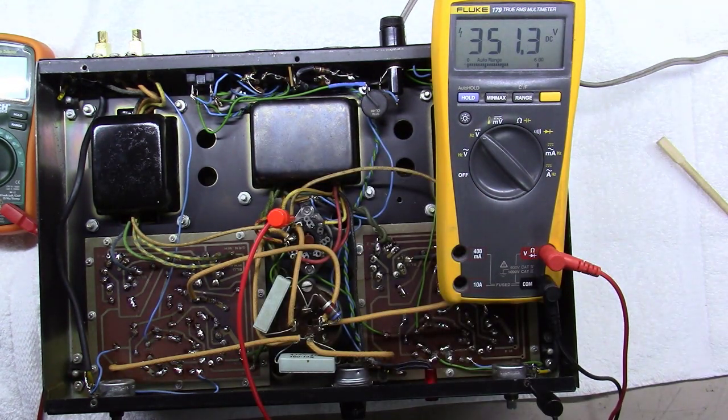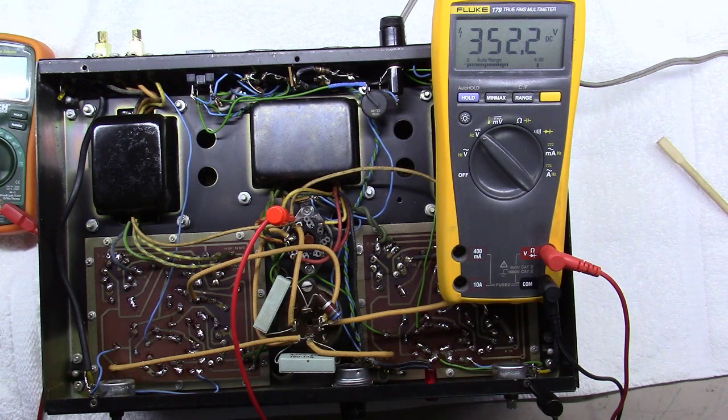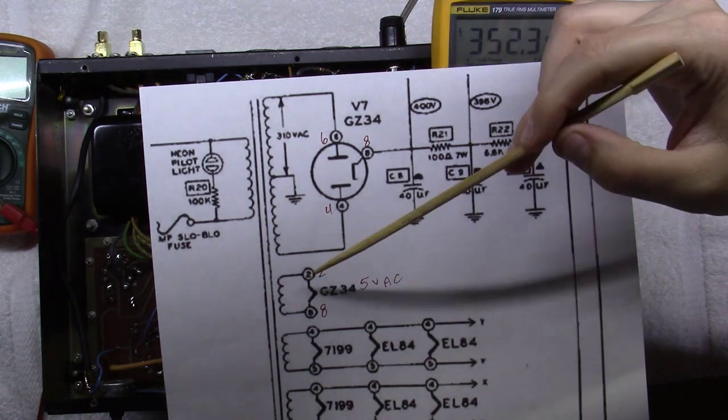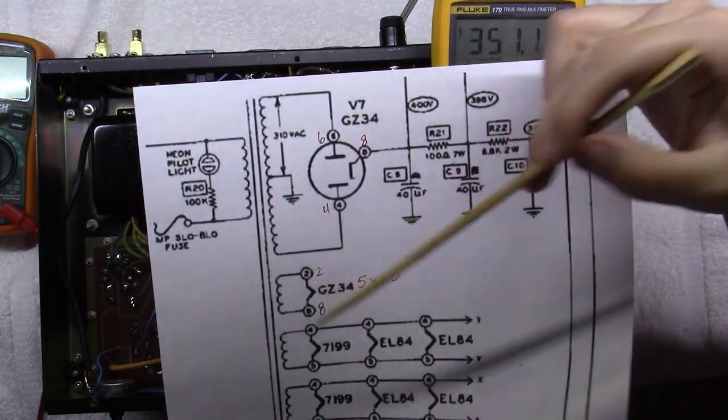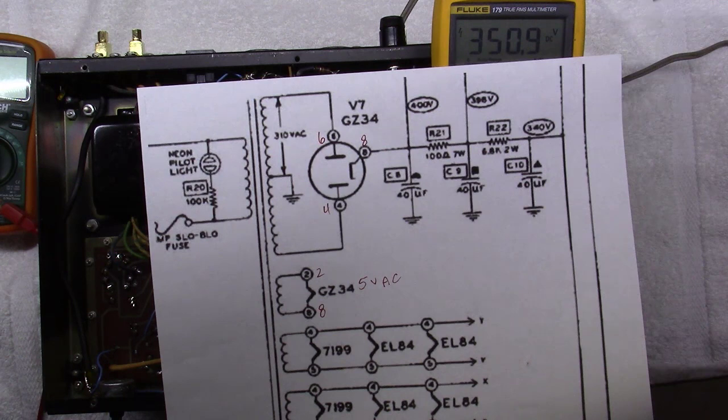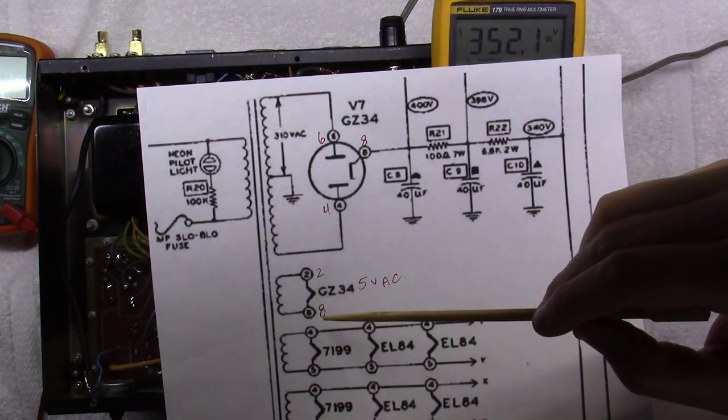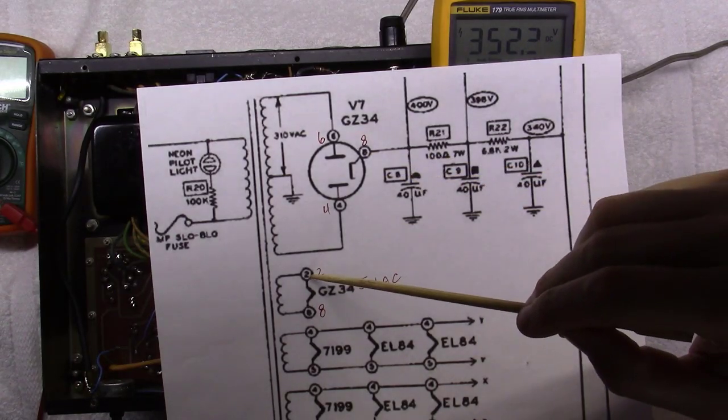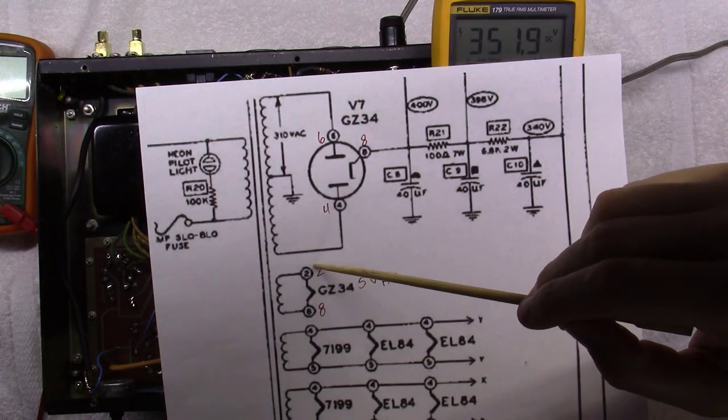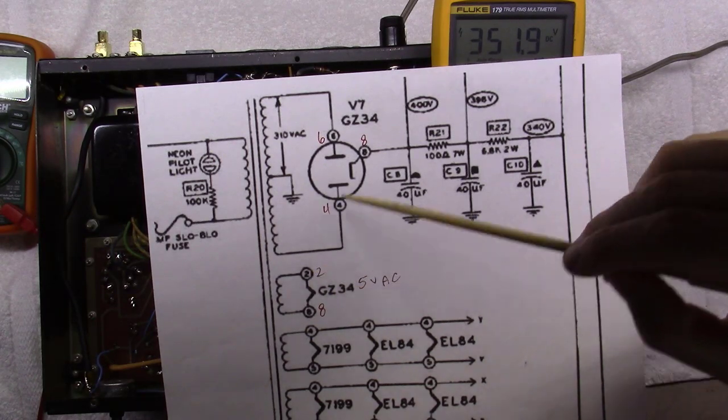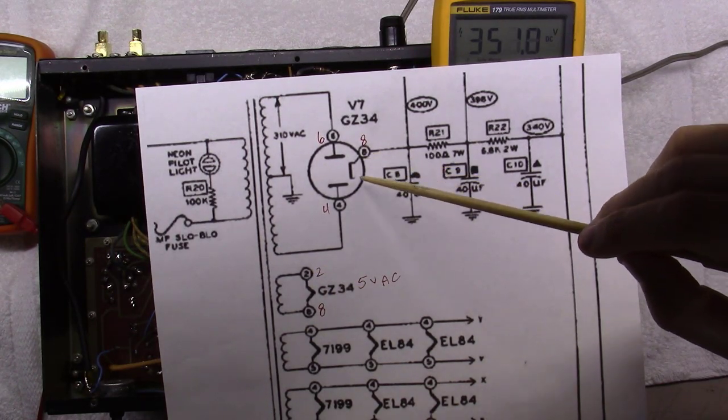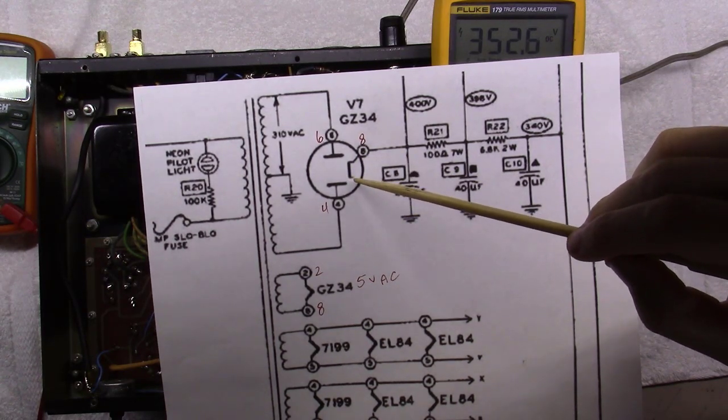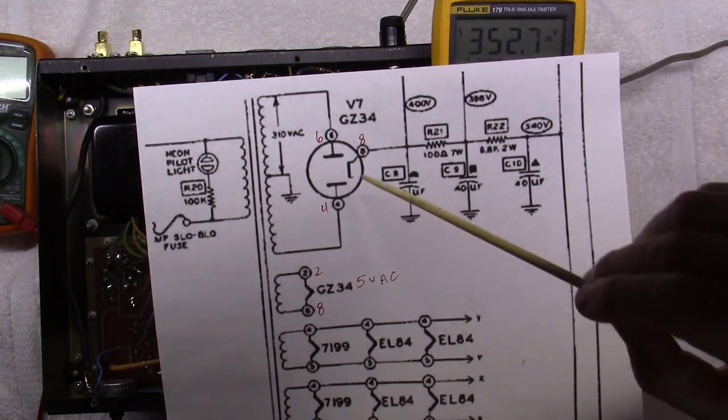So here's the reality: you have on pin two and pin eight the 350 some volts of DC. At no point, even though pin eight is sitting here with 351 volts on it, at no point is pin two grounded. If you were to ground pin two, then from point eight to ground you would have 400 and some volts sitting there and it would vaporize this filament in a second.